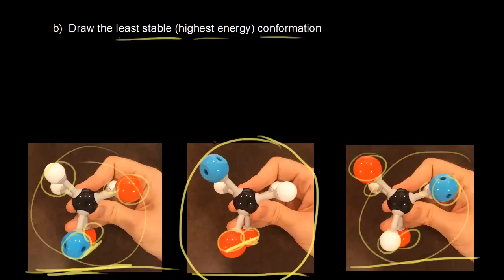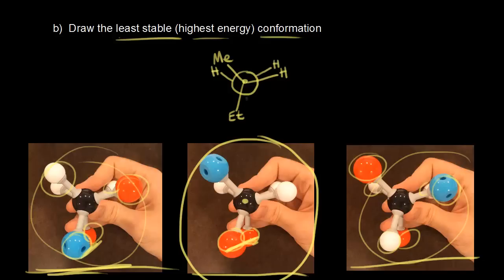Let's draw the Newman projection for this least stable conformation. The front carbon is represented by a point, with a methyl group going up and to the left, a hydrogen going up and to the right, and an ethyl group going down. For the back carbon, represented by a circle, we have a hydrogen going up and to the left, another hydrogen, and an ethyl group going down. This is our least stable conformation for our compound, drawn as an eclipsed conformation in a Newman projection.